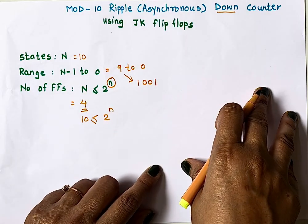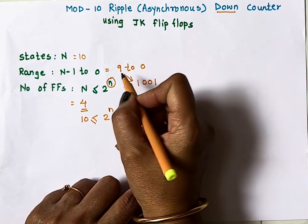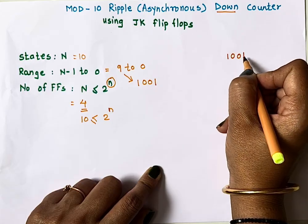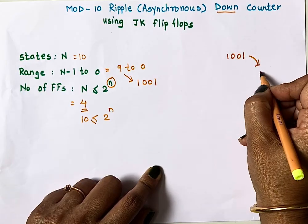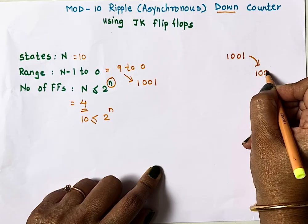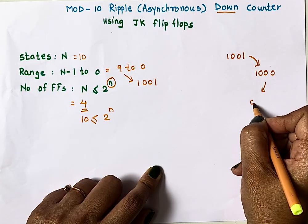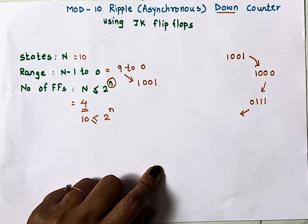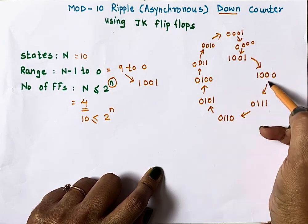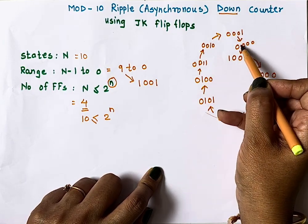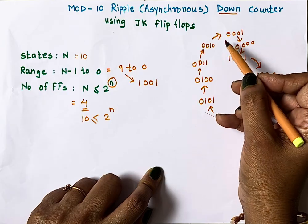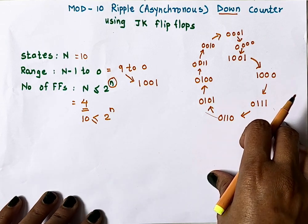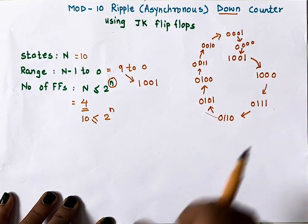Next, we draw the state diagram showing which outputs we will get. The counter will go from 9 (binary 1001) down to 0, passing through 8, 7, 6, and so on. After reaching 0, it comes back to 9, rotating through these states in a circular fashion.